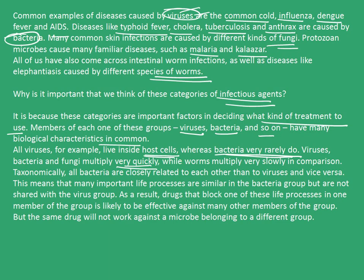Taxonomically, all bacteria are more closely related to each other than to viruses and vice versa. This means many important life processes are similar within the bacteria group but are not shared with the virus group. As a result, drugs that block one of these life processes in one member of the group are likely to be effective against many other members of the same group, but the same drug will not work against a microbe belonging to a different group. Medicines developed to treat bacterial diseases can work on other bacterial diseases as well, but will not work on diseases caused by a virus or a protozoan.